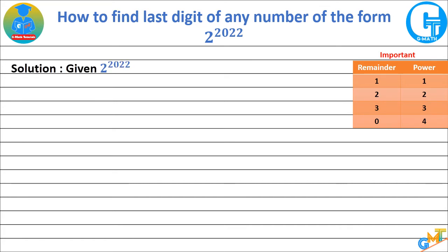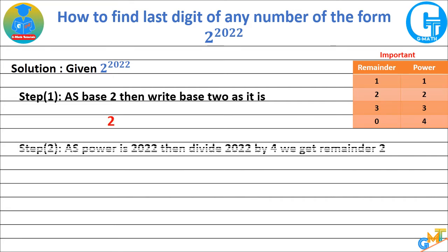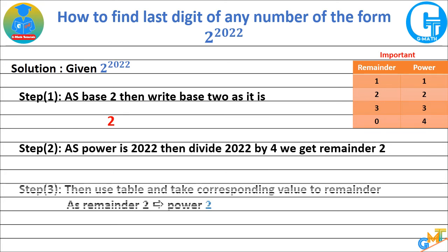In the solution, step 1: write the base as it is — here, base 2, write 2. Then divide the power 2022 by 4; we get remainder 2.